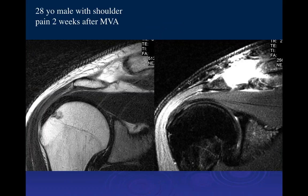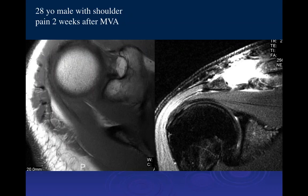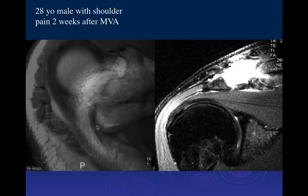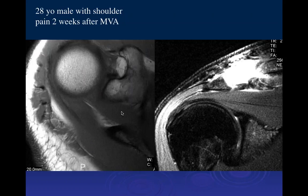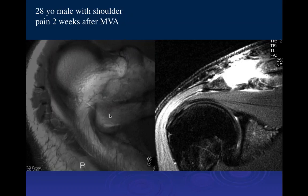There's a lot of edema at the distal clavicle at the AC joint, and on the coronal plane the distal clavicle appears posteriorly displaced. On the axial T1 image, the clavicle appears posteriorly oriented. This constellation — AC joint changes and posterior dislocation with CC ligament disruption — makes this a Type 4 AC injury.